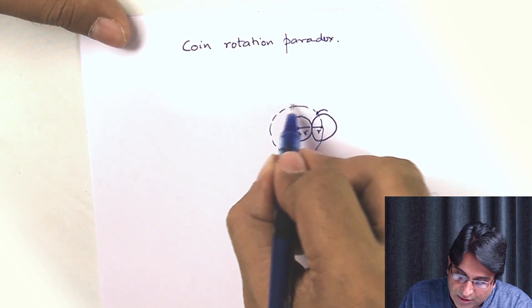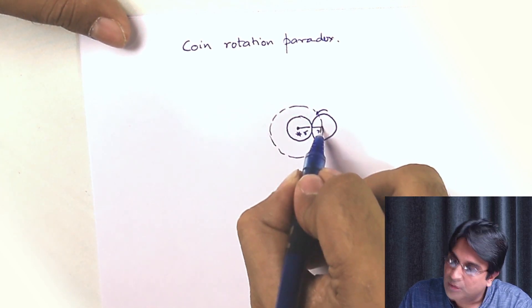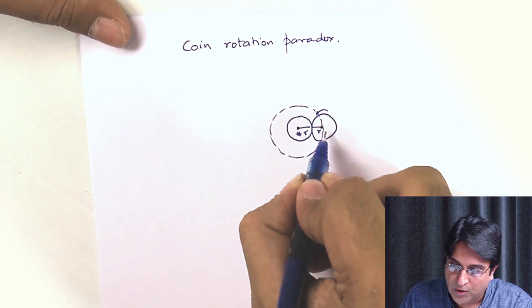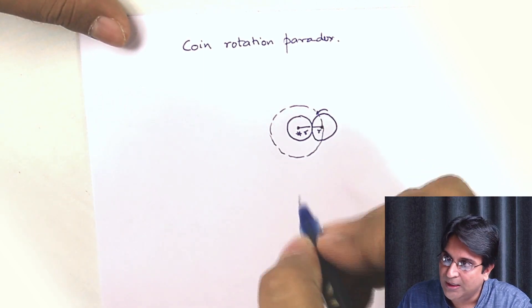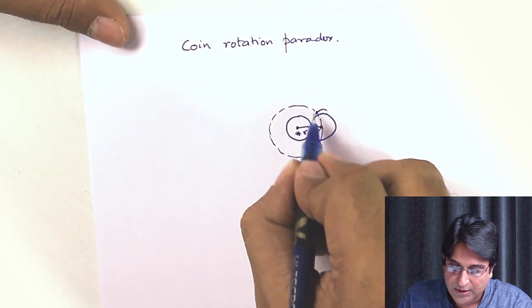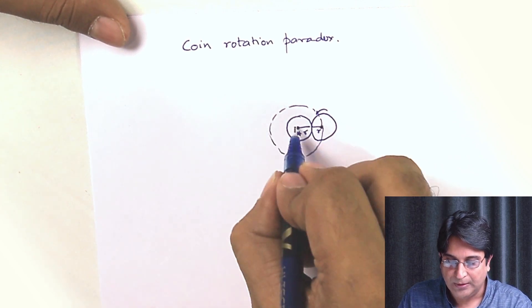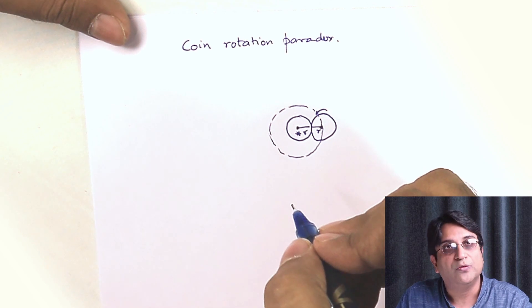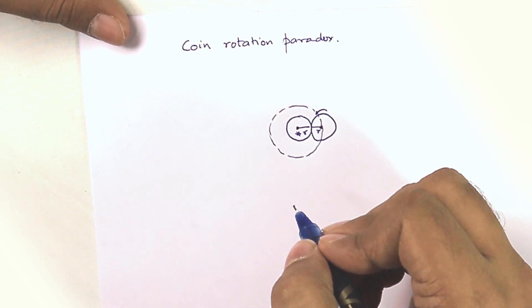Now the question is, as it turns around and comes back to the original position, how many rotations would it have made around its own center? In other words, how many times does the outer coin spin around itself as it goes around the fixed inner coin? You can try to think of it and see what answer you come up with.